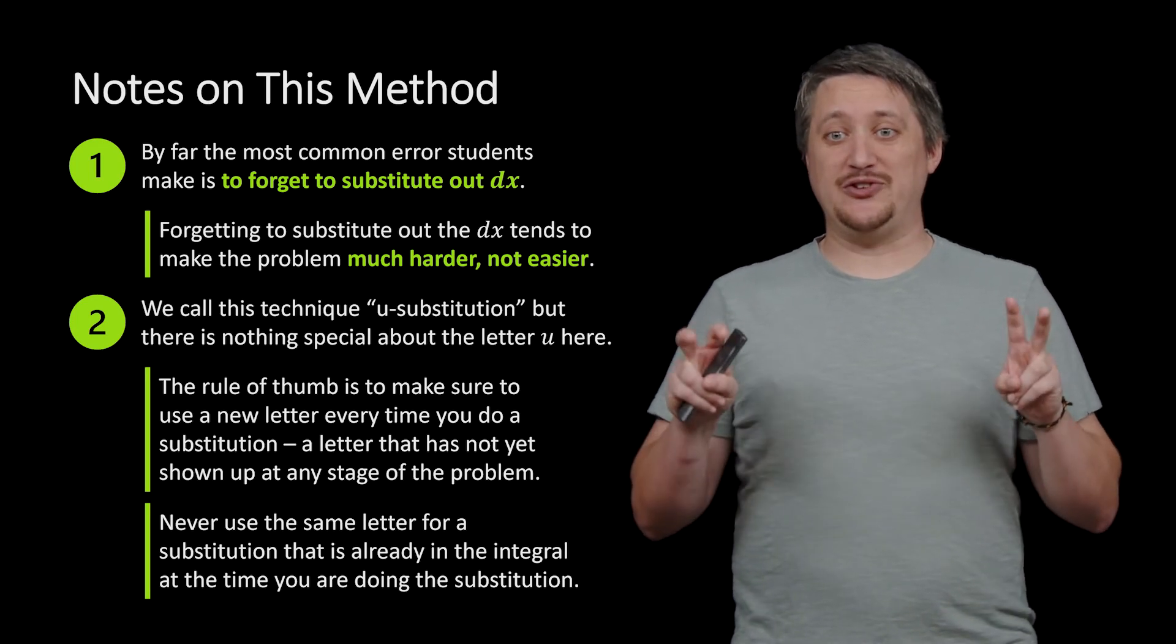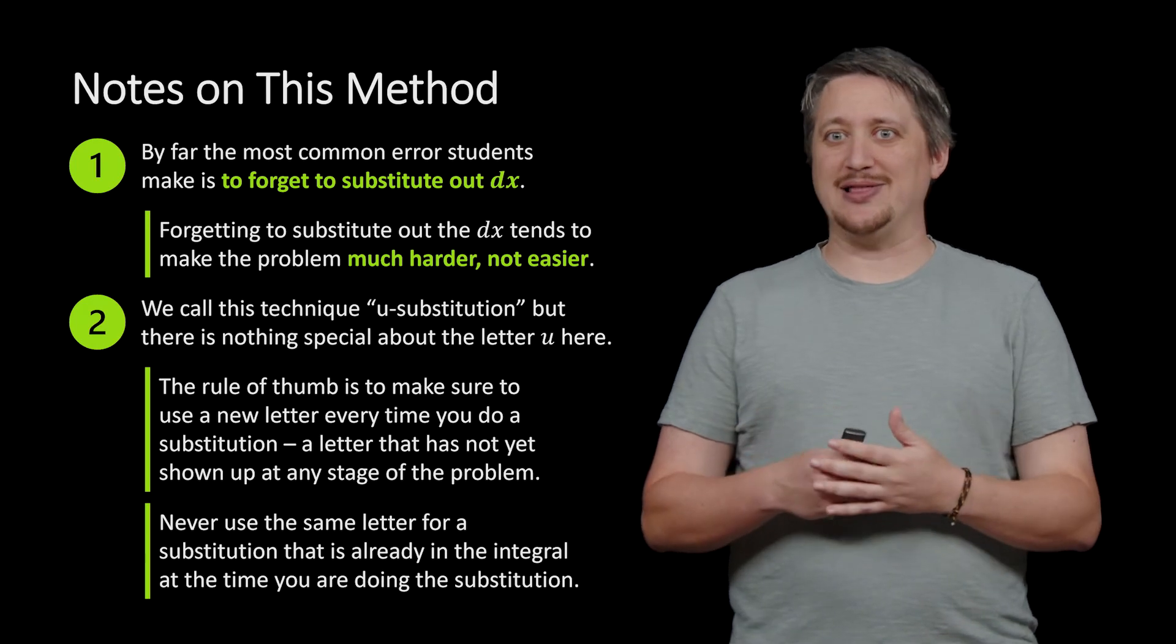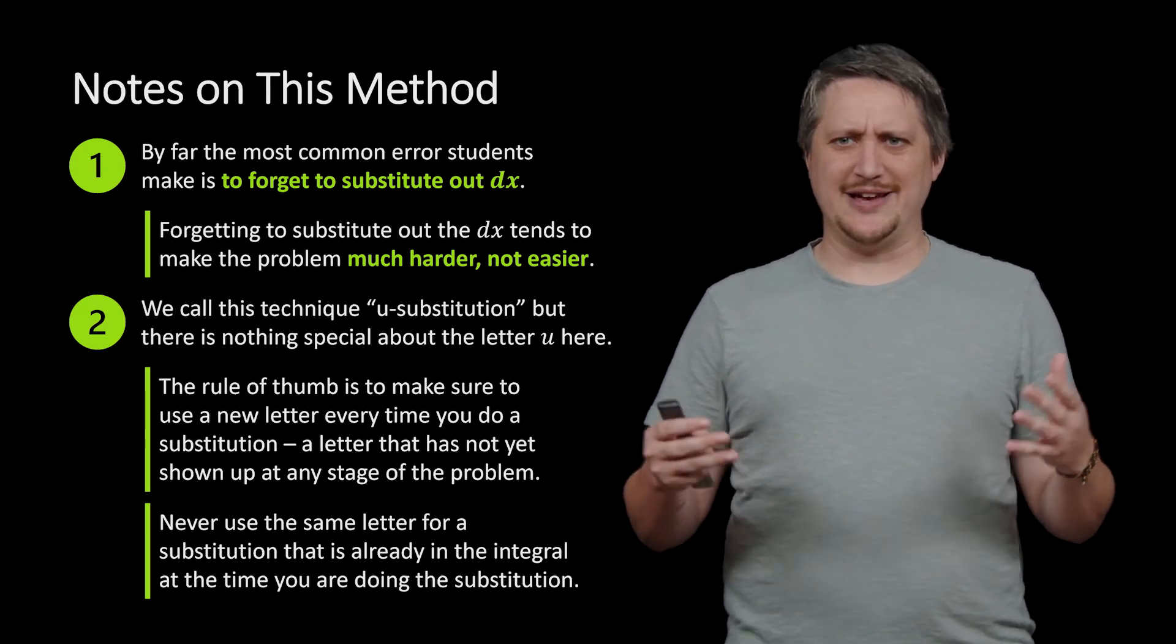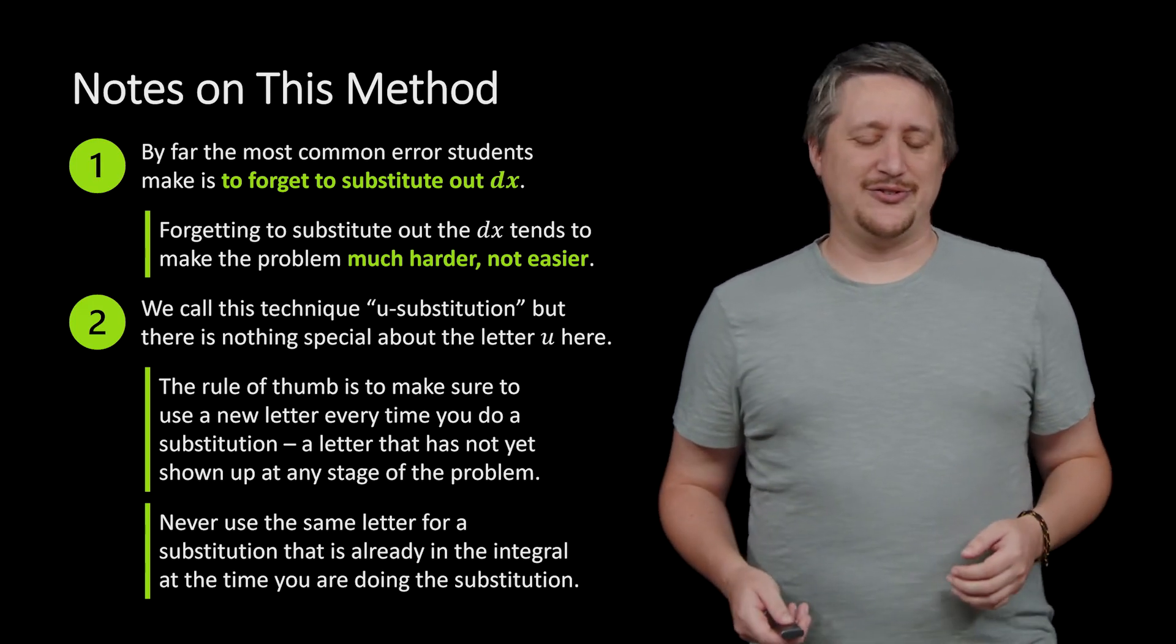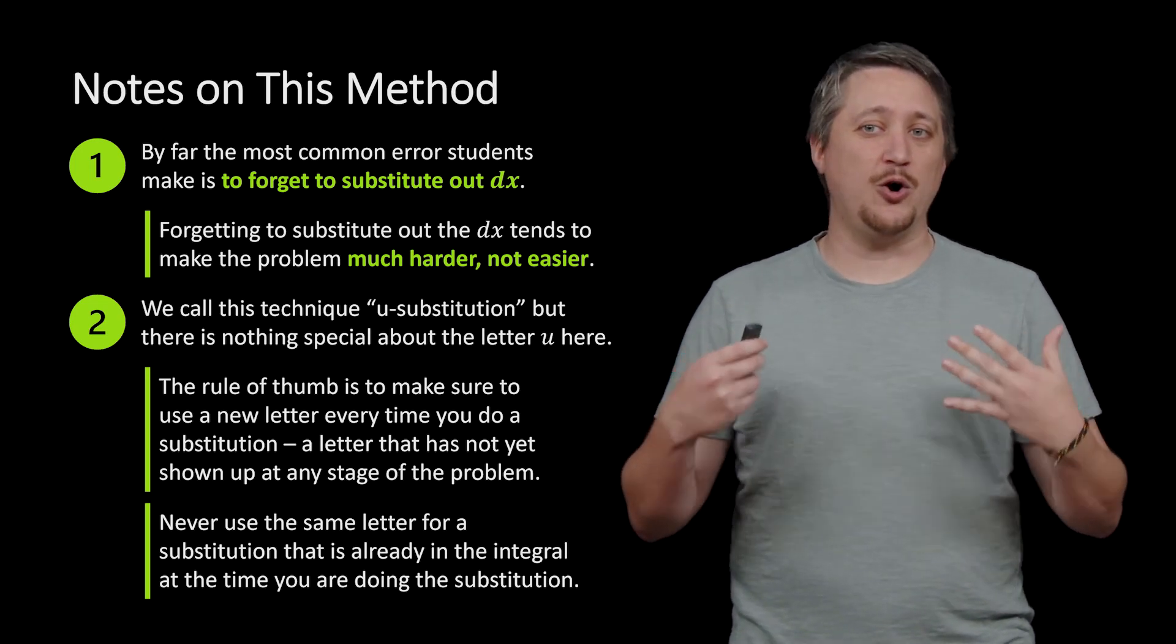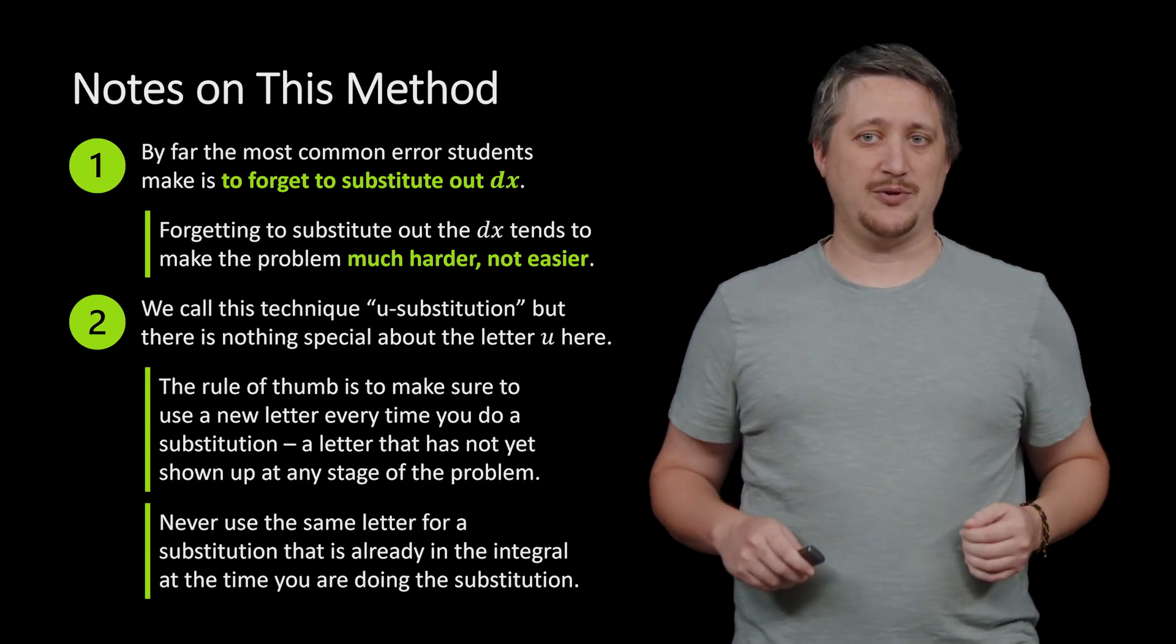So if the original integral you were given was in terms of u, even though you're doing a u sub, don't use a u because you already have a u. That'll just generate lots of confusion because you'll be writing down something like u equals u squared, and that just mathematically is all kinds of bad. So feel free to use different letters, and importantly, always use a different letter than what you're looking at when you're doing the substitution.